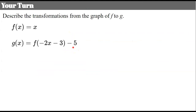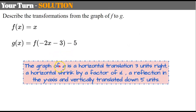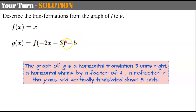One more for you. Go ahead and pause, write your description, and come back to check your work. Welcome back. The graph of g has a horizontal translation three units to the right. It is a horizontal shrink by a factor of one half. A reflection in the y-axis because it's inside the parentheses. And it's been vertically translated down five units.